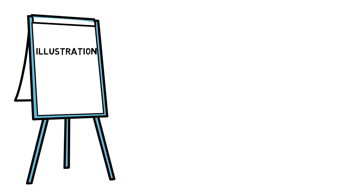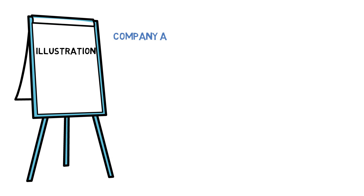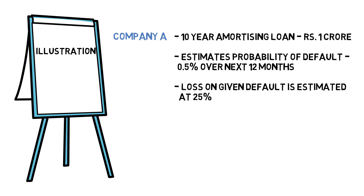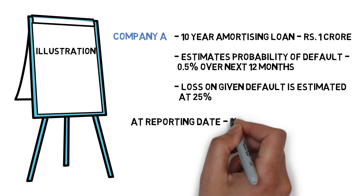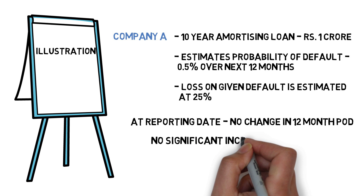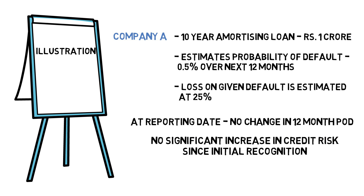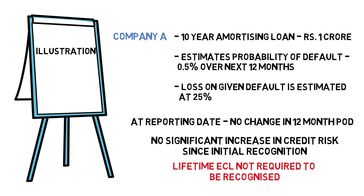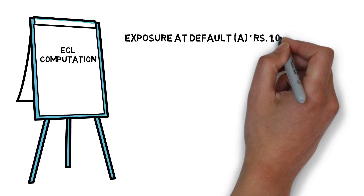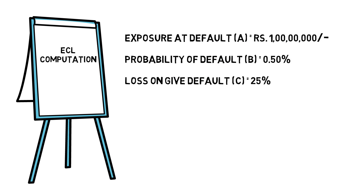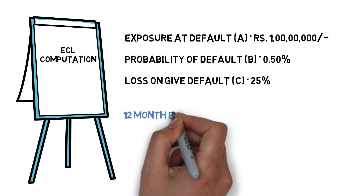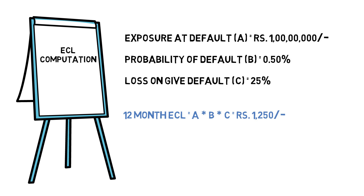Let us understand the ECL computation through an illustration. A company has taken a 10-year amortizing loan of ₹1 crore. It estimates the probability of default at 0.5% over the next 12 months and the Loss Given Default at 25%. At the reporting date there is no change in the 12-month probability of default and no significant increase in credit risk since initial recognition, so lifetime ECL is not required. Computing: EAD = ₹1 crore × PD 0.5% × LGD 25% gives a 12-month ECL of approximately ₹1,250.